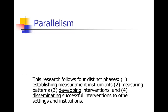So you would say: 'This research follows four distinct phases. One, establishing measurement instruments. Two, measuring patterns. Three, developing interventions. And four, disseminating successful interventions.' Pay attention to this, especially when you're writing lists — students often get this wrong because you get buried in the list and lose your place. You have to go back and make sure everything is parallel.